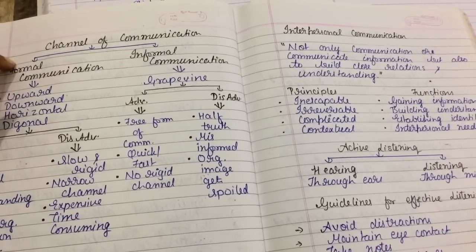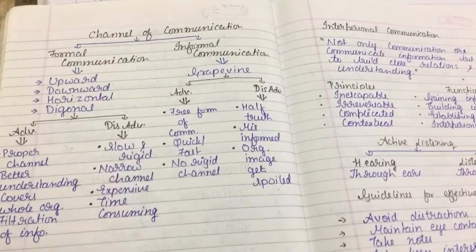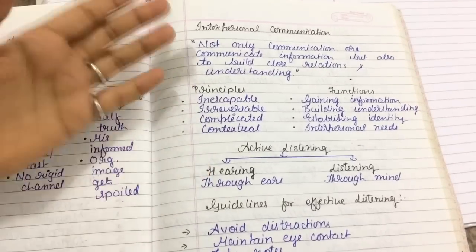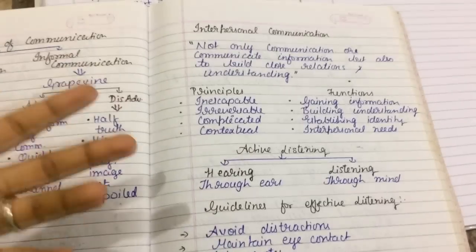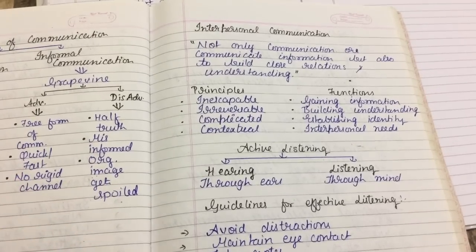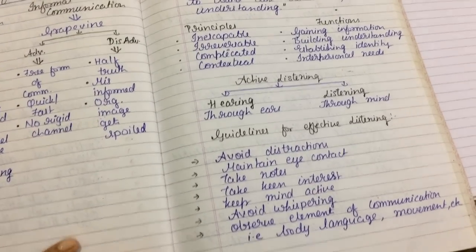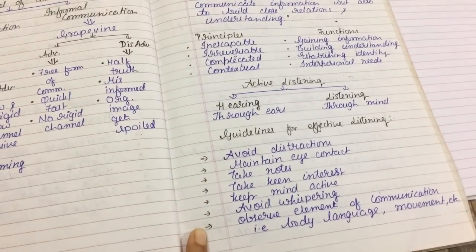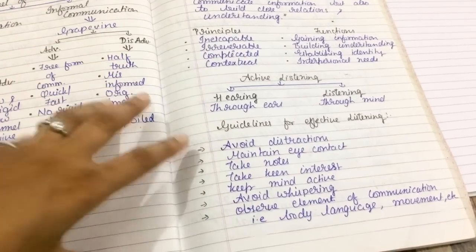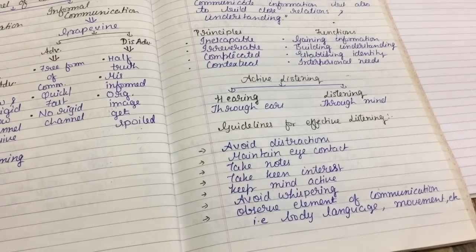Quick recap: channels of communication — formal includes upward, downward, horizontal, and diagonal; informal includes grapevine, each with advantages and disadvantages. Interpersonal communication means two or more persons communicating not only to exchange information but also to build relations and understanding. Active listening means listening through the mind and understanding every aspect of what you hear. The guidelines for effective listening are the points to consider to listen effectively. Thank you for watching and please subscribe.